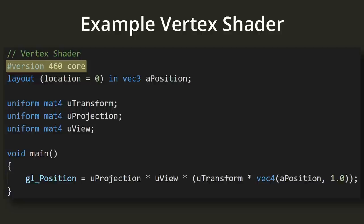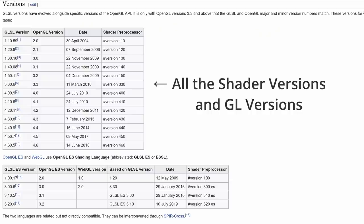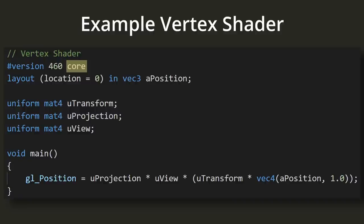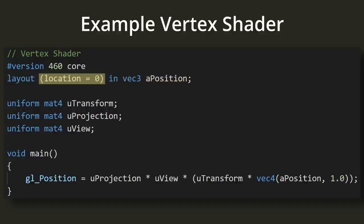The first line declares the GLSL version we're using. It is a preprocessor directive that must appear as the very first line of the shader, excluding comments. This tells OpenGL which version the shader must be compatible with. The last part of that line tells us we are using the core version of OpenGL, meaning we will not use any deprecated functionality. The alternative is compatibility mode, which allows use of deprecated functionality. The next line tells OpenGL to expect a vertex attribute at location 0 consisting of three floating point numbers.